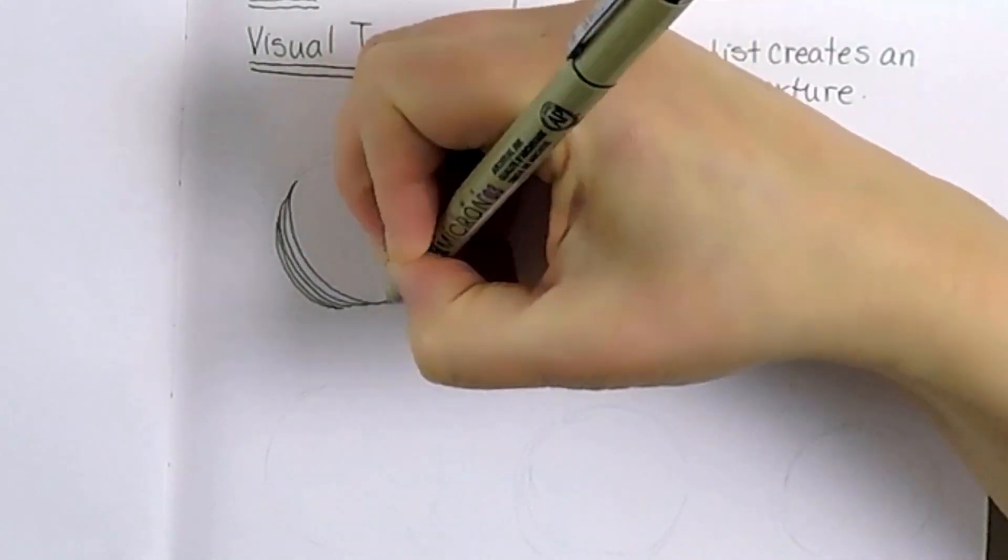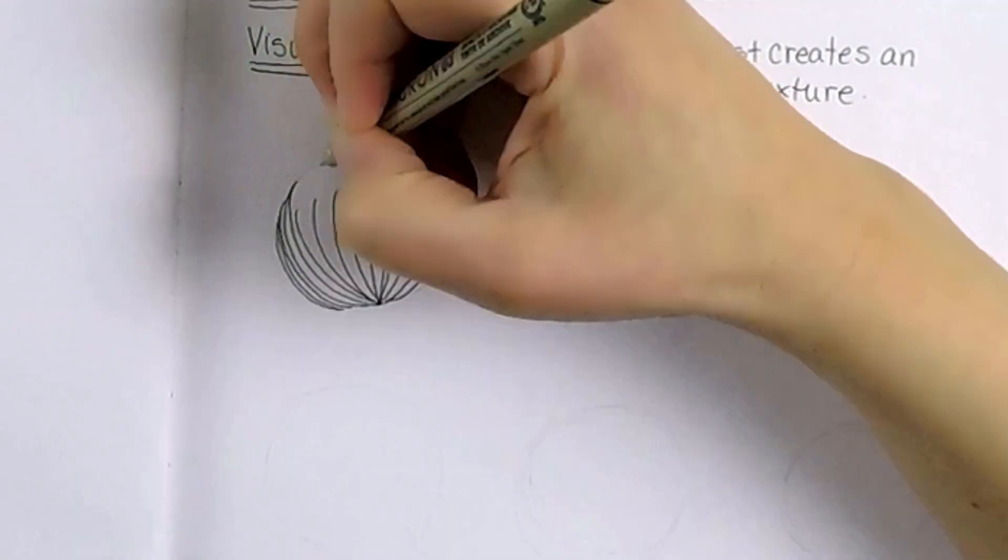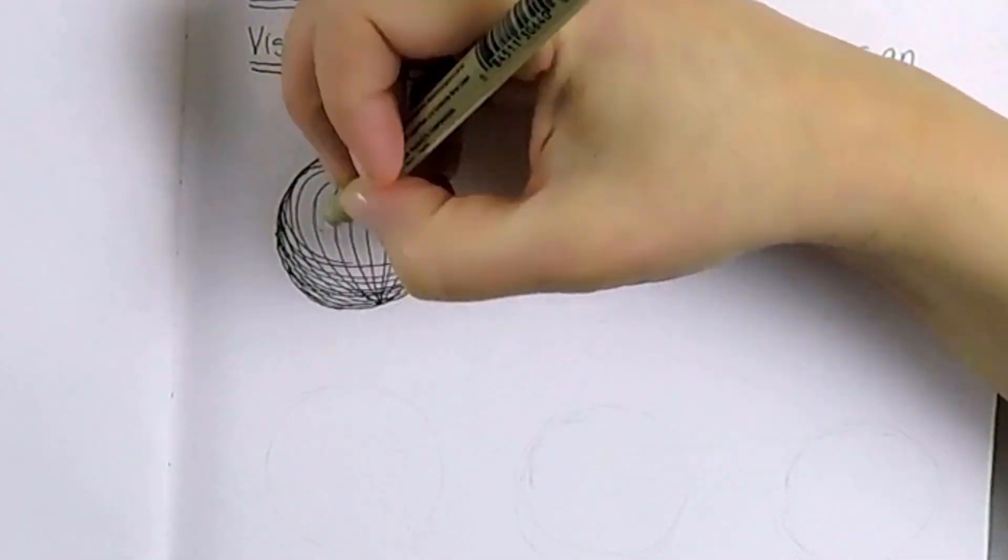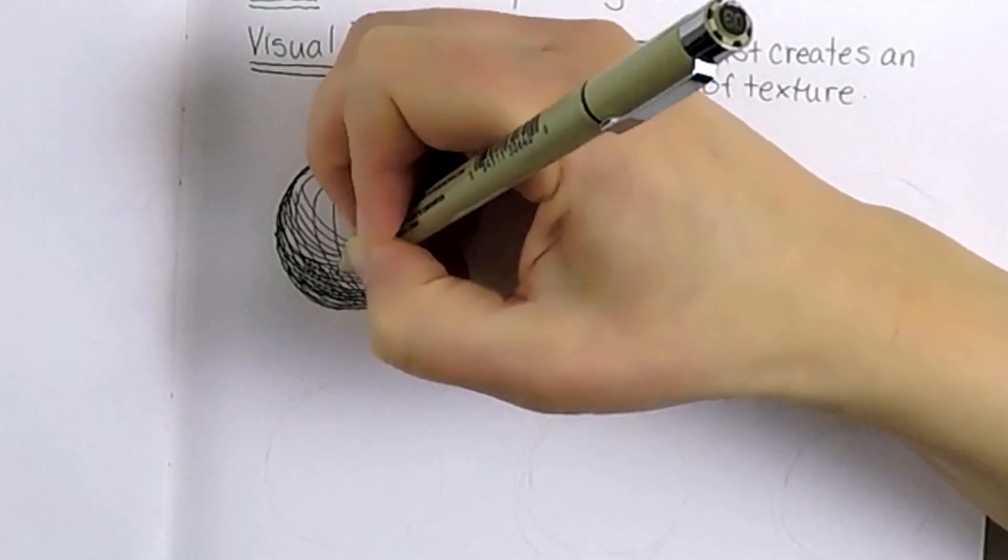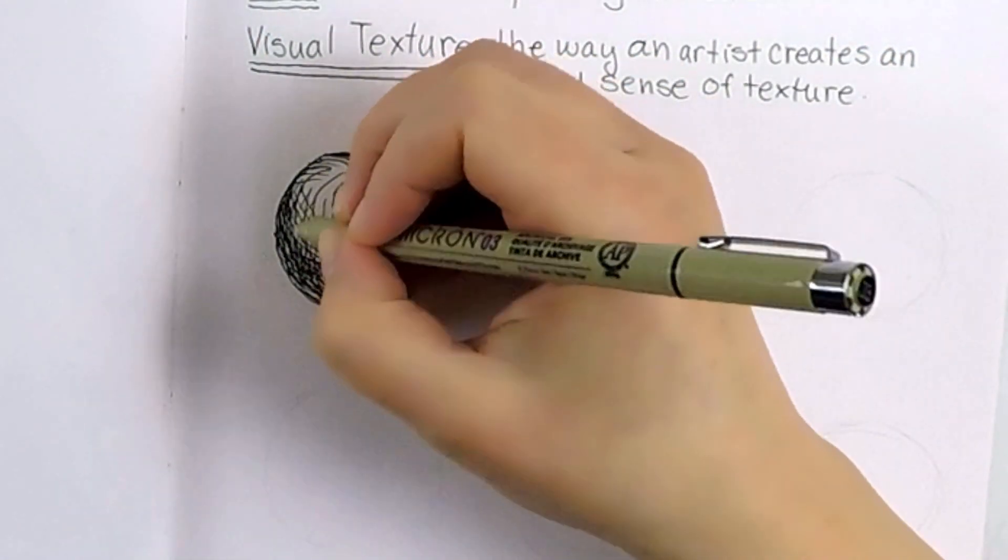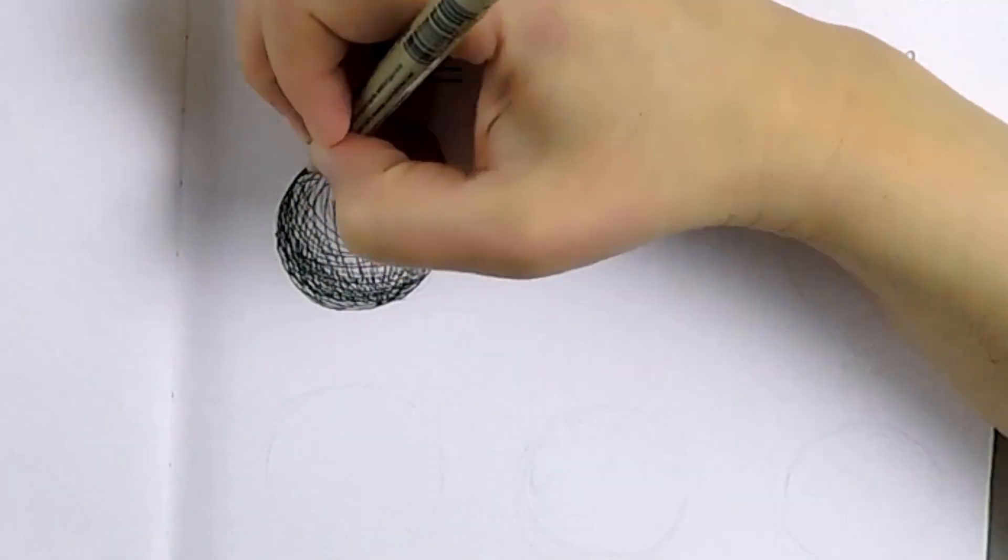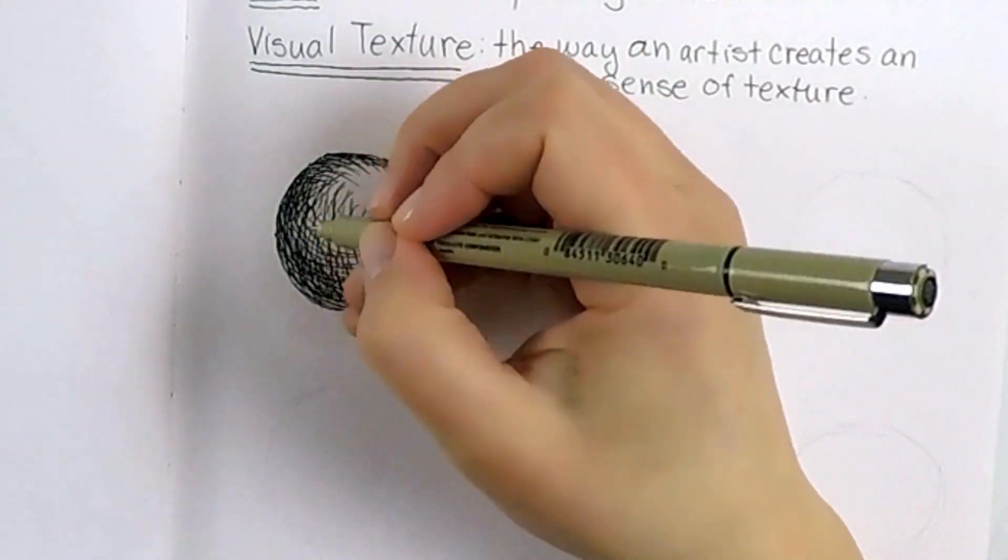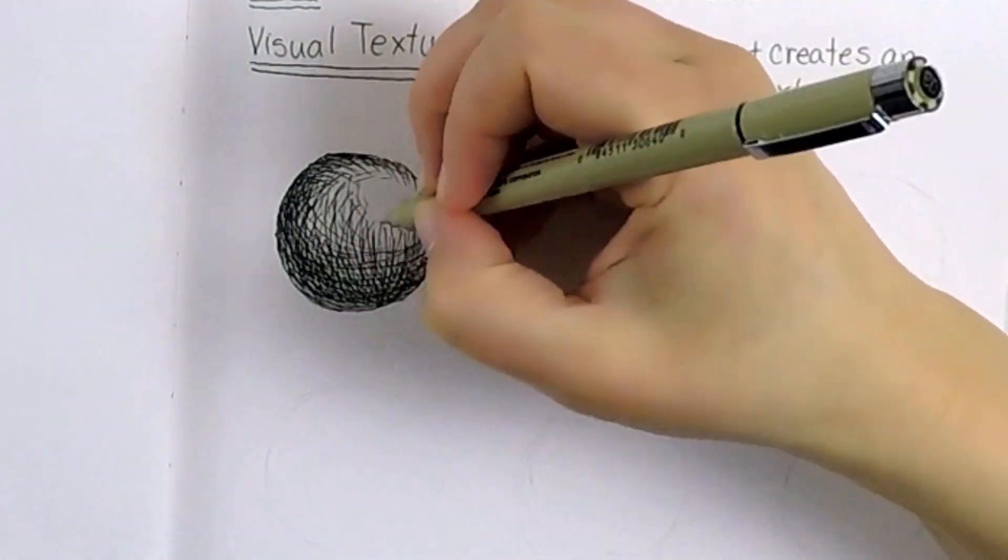Let's start with shading this circle with curved hatching and cross hatching lines. The goal is to create the illusion of 3D form by having highlights and shadows. For this activity let's imagine that the light source is coming from the upper right hand corner of the page. This will cause all the shadows to be on the left side of these drawings.